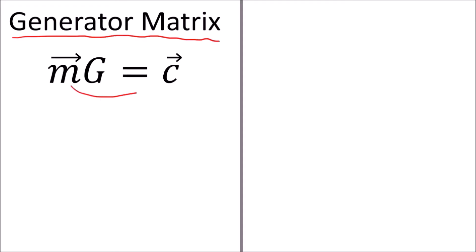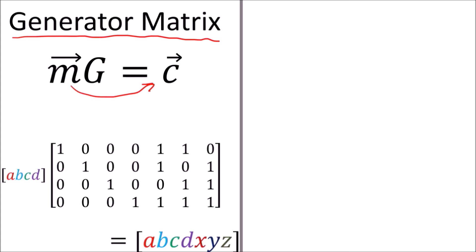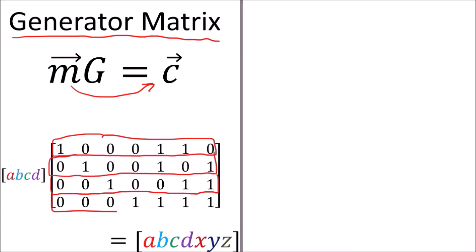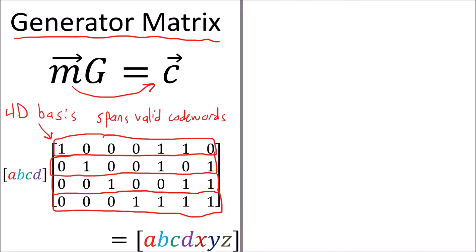To summarize this video: we learned about the generator matrix G, which maps messages to valid codewords in a higher-dimensional space. We can think of the set of all valid codewords as the span of the rows of the G matrix. So the set of all valid codewords here would be a 4-dimensional space with the rows of G as the basis vectors. While the codeword space is 7-dimensional, the set of valid codewords forms a 4-dimensional subspace of that 7-dimensional space, and the 4 rows of the generator matrix form the basis for that 4-D subspace.